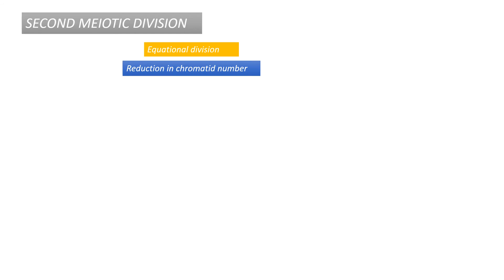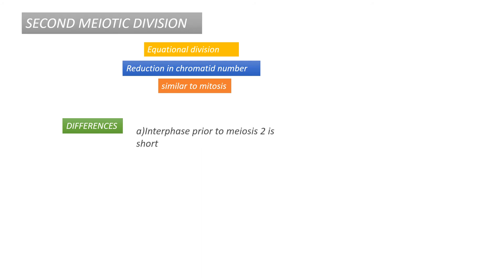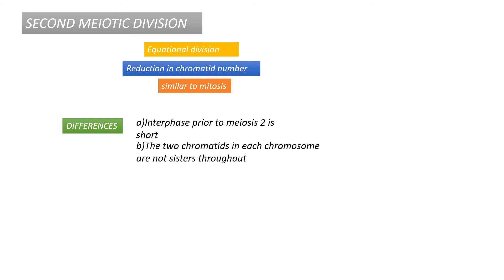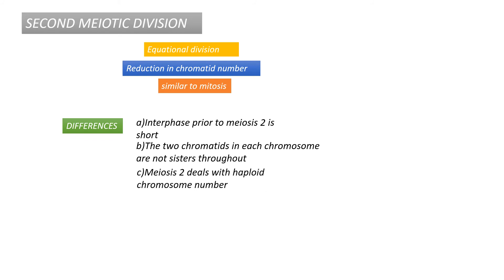Meiosis II is also called equational division. In meiosis II, there is reduction in chromatid number because the sister chromatids separate and enter into different cells. The second meiotic division is similar to mitosis but with some differences: the interphase prior to meiosis II is short and does not have an S phase, so DNA synthesis does not occur. Additionally, the two chromatids in each chromosome are not identical due to crossing over during meiosis I, and meiosis II deals with haploid chromosome number, while mitosis deals with diploid chromosome number.